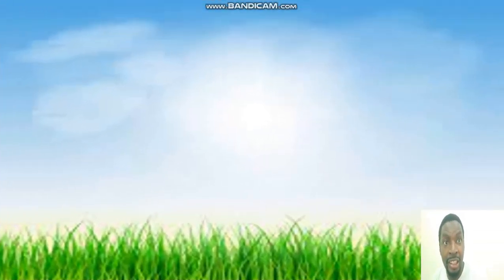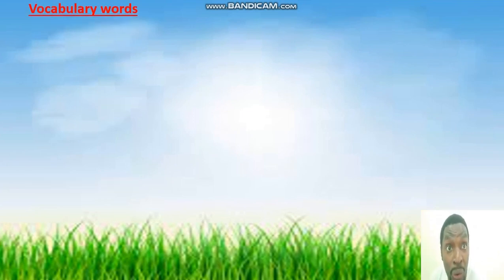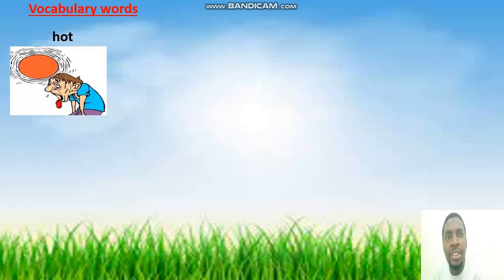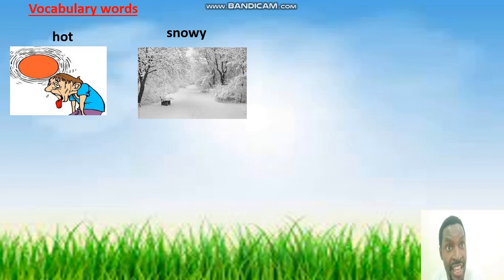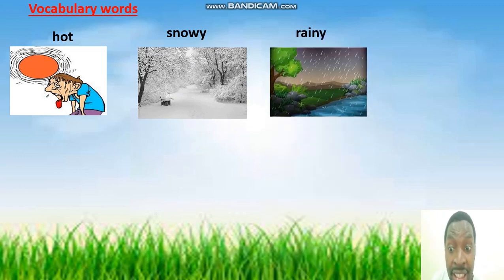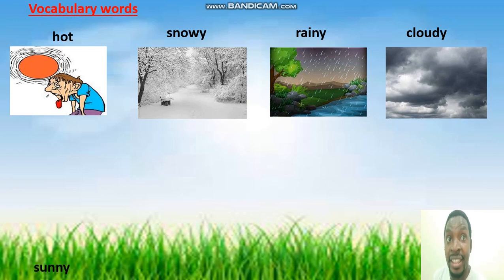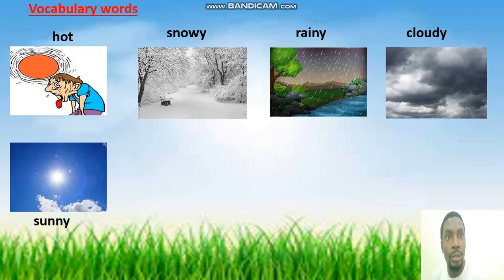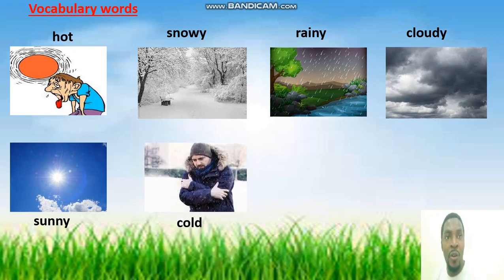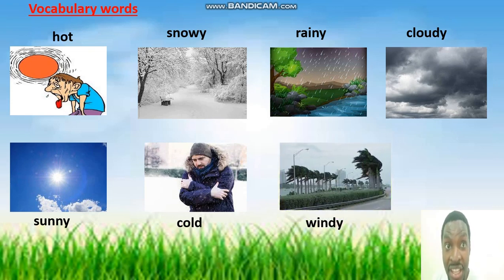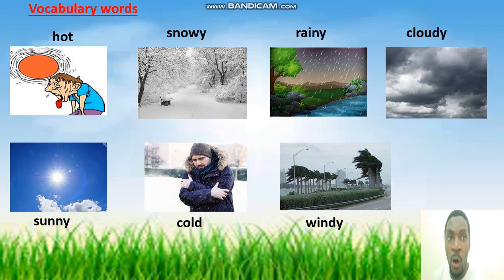In this slide, let's look at some vocabulary words in relation to the weather. Number one: hot — it's hot. Snowy — it's snowy. Rainy — it's rainy. Cloudy — it's cloudy. Sunny — it's sunny. Cold — it's cold. Windy — it's windy. Let's read again: hot, snowy, rainy, cloudy, sunny, cold, windy.